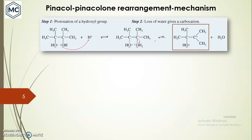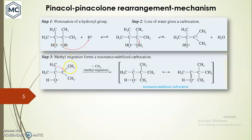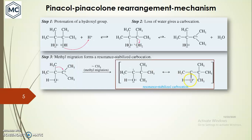This carbocation is a tertiary carbocation, but it can form an even more highly stabilized carbocation by methyl migration. A 1,2-migration takes place: one group from the adjacent carbon migrates toward this tertiary carbocation, forming another carbocation that is more stable than the tertiary one. This carbocation is resonance-stabilized — it is actually an oxonium ion, as you can see here.